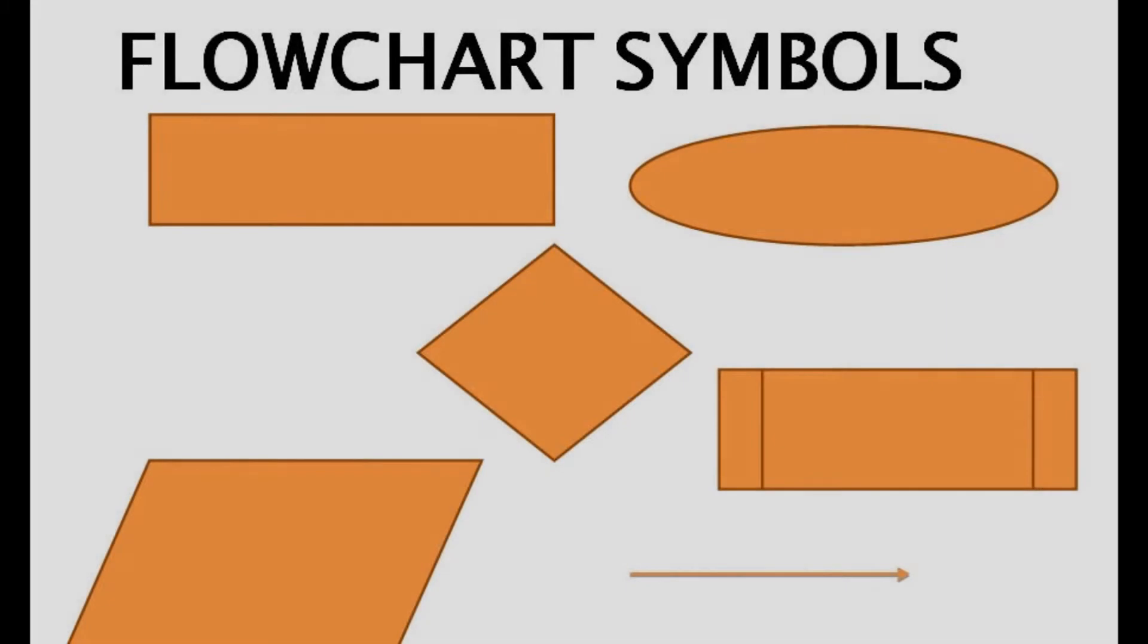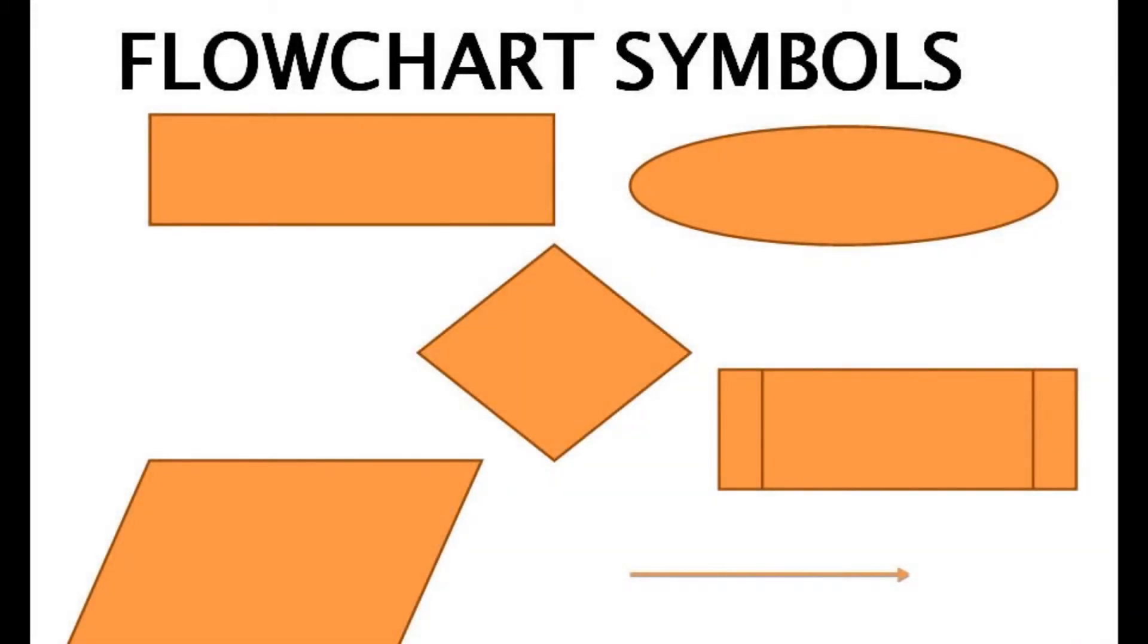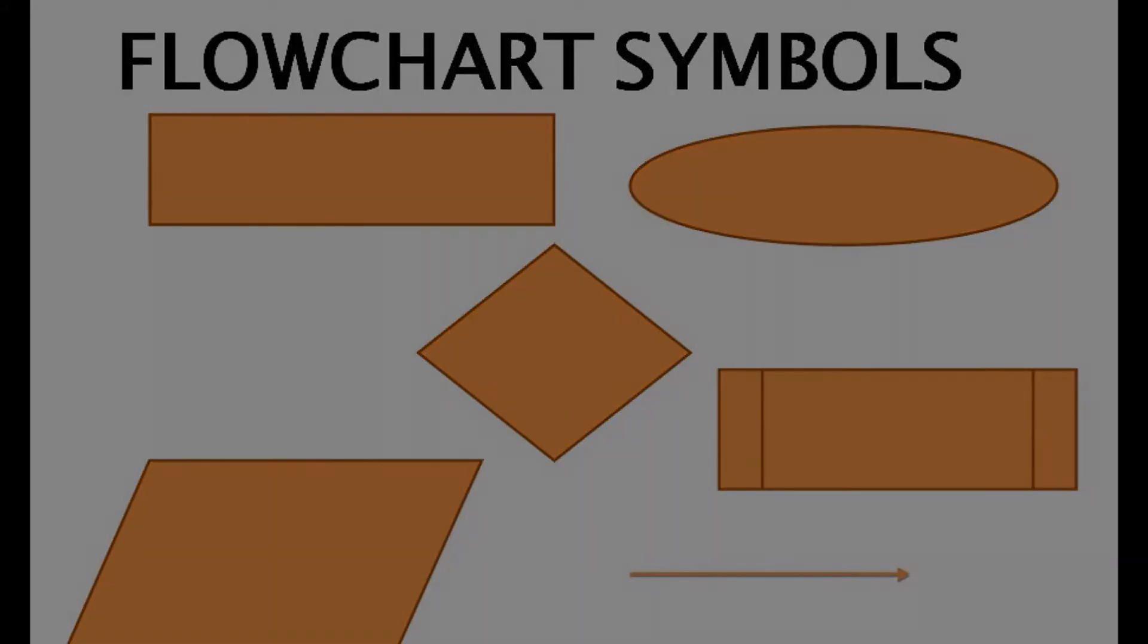Here are the flowchart symbols. The rectangle is the process. The oval is the start slash stop. The diamond is the test condition. The parallelogram is the input slash output. And the rectangle with two lines in it is the subtask. The arrow is called the flow arrow and shows which direction the flowchart is going.